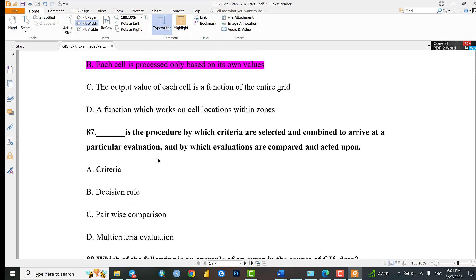Question 87: This is the procedure by which criteria are selected and combined to arrive at a particular evaluation, and by which evaluations are compared and acted upon. The answer is A: Criteria, the decision rule.